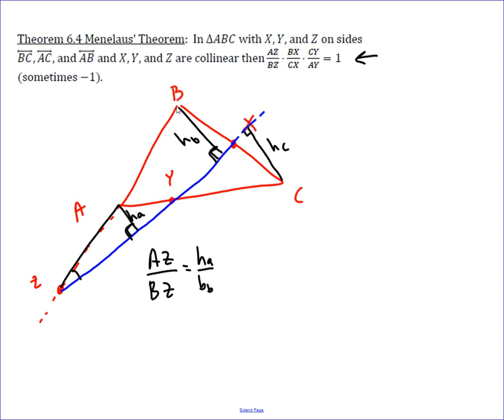And then similarly, we can come over here and see that this angle is congruent to that angle, and so these triangles are similar to each other. And again, if we do BX over CX, well, that's going to be equal to those two sides that are opposite the congruent angle by vertical angles, which are HB and HC, and so it's going to be HB over HC.